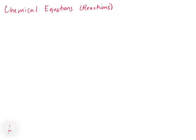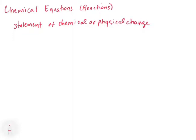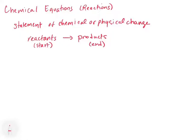A chemical reaction is basically a statement of chemical or physical change. You have a set of reactants, which is your starting point — what you start with — and then you have your products, which is what you end with. When we write a chemical reaction, we write the reactants on the left and the products on the right as the endpoint.